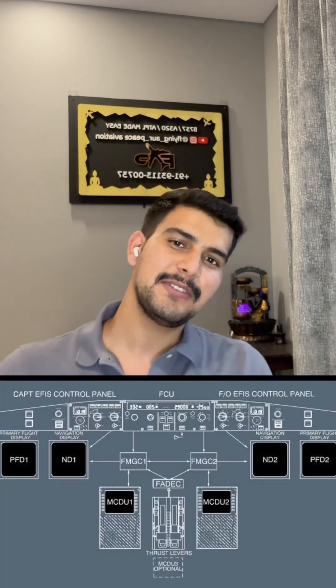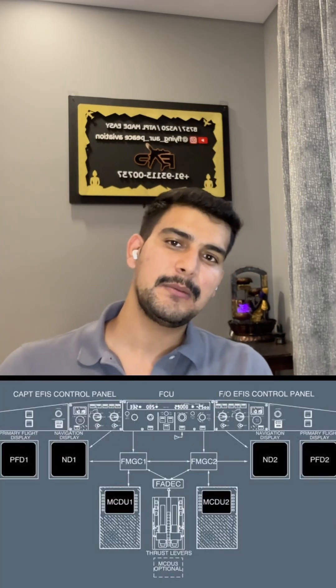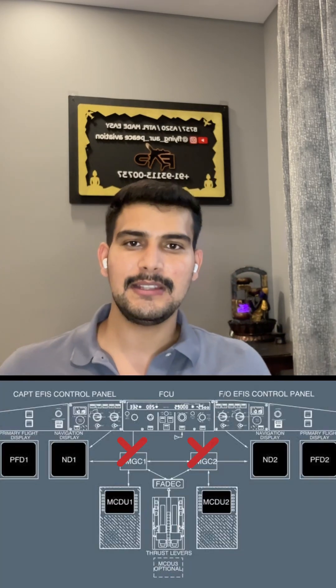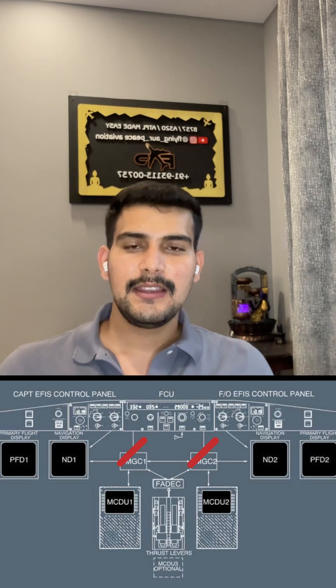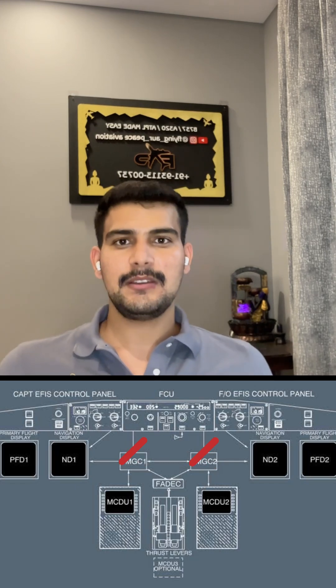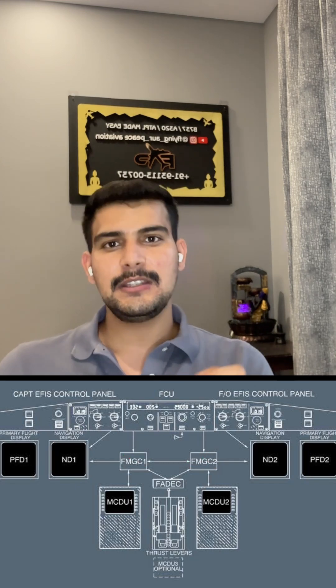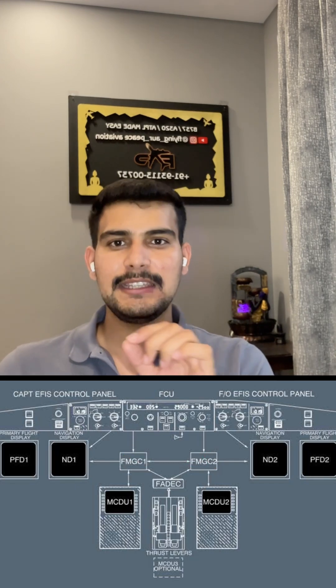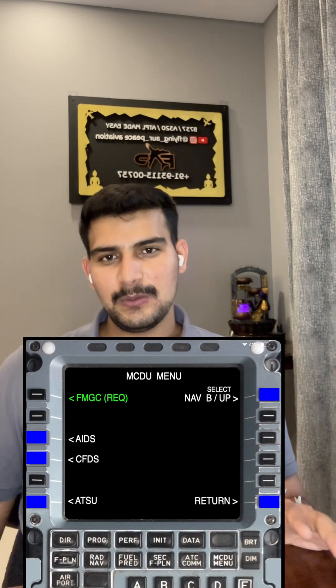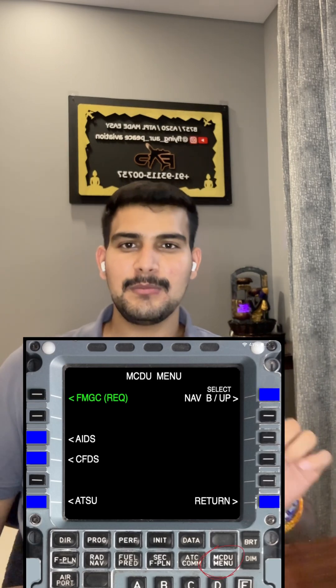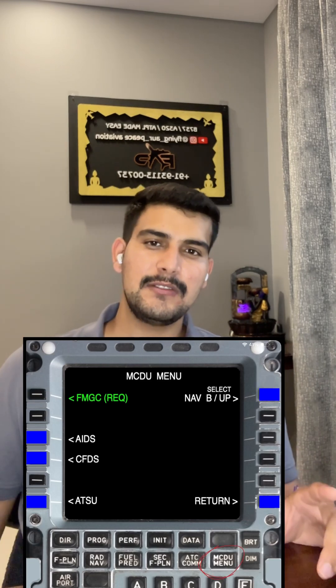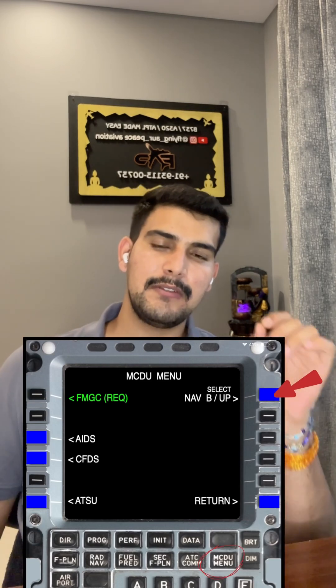Now imagine you are cruising at 35,000 feet and both FMGCs fail. Your MCDU shows a degraded status. What will you do? You go to the MCDU menu page and you will see backup nav written there.